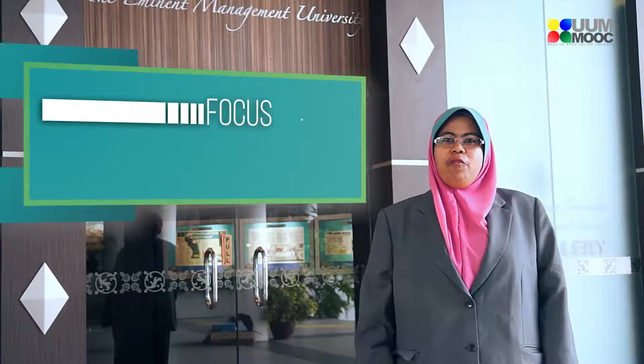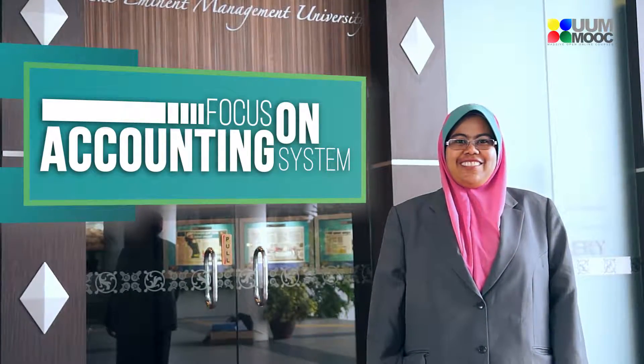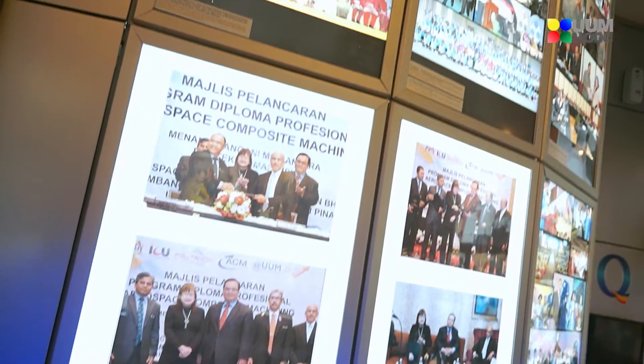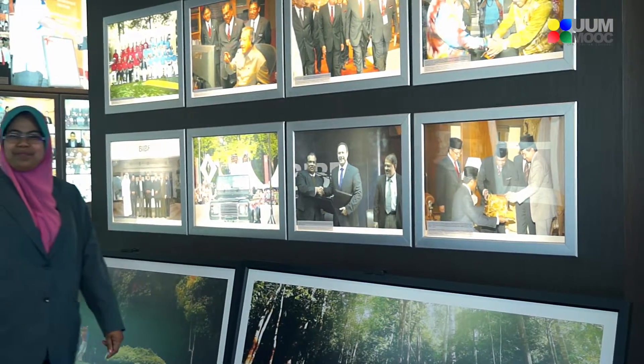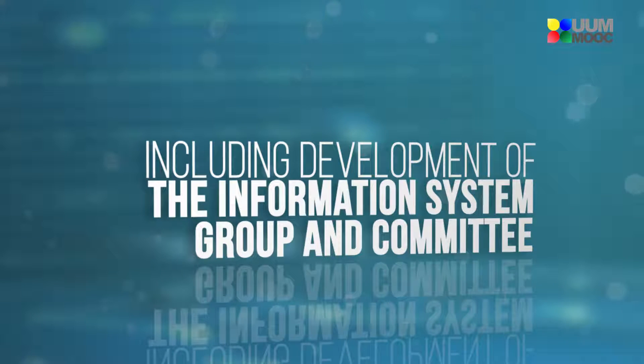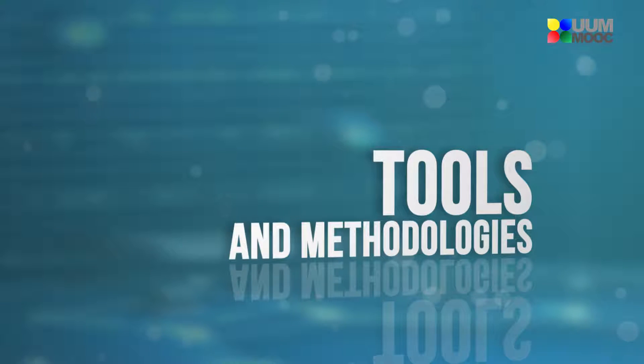This course focuses on analysis and design of the accounting system. It will be divided into 5 topics covered in 14 weeks. In the first topic, you will be introduced to the system development process, including the development of information system groups and committees, and the tools and methodology used in system development.